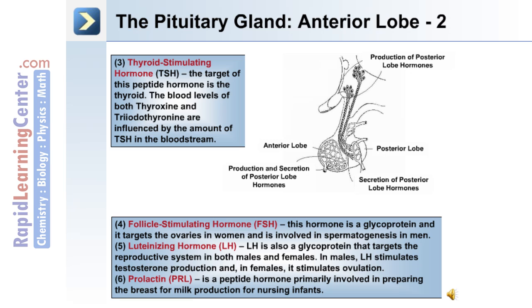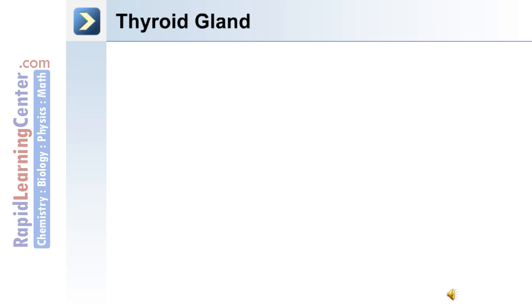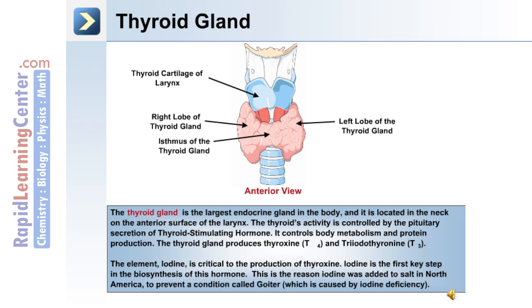The next endocrine gland is the thyroid gland. As depicted in the anterior view, the thyroid is made up of a left lobe and right lobe separated by the isthmus. It is the largest endocrine gland in the body, located in the neck on the anterior surface of the larynx. The activity of the thyroid gland is controlled by pituitary secretion of TSH, and it controls body metabolism and protein production.